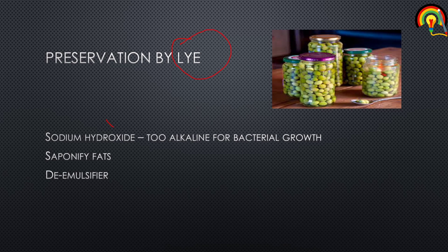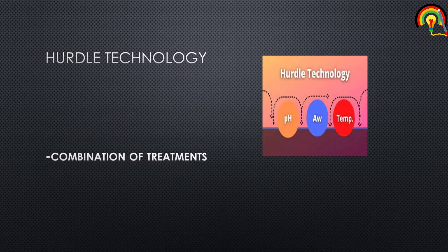The next type is preservation by lye. Lye is nothing but sodium hydroxide. When sodium hydroxide is used to preserve food, it becomes too alkaline for bacterial growth. It also saponifies fats in the food and changes its flavor and texture. Lye is also used as a de-emulsifier.